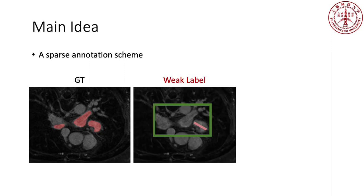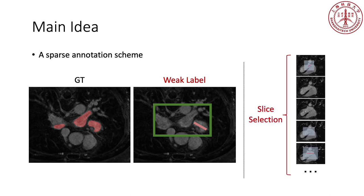We propose a new type of weak label, with a scribble to denote a random foreground region and a loose bounding box to encircle all foreground regions. Besides, instead of labeling all slices, we perform slice selection to reduce label density.